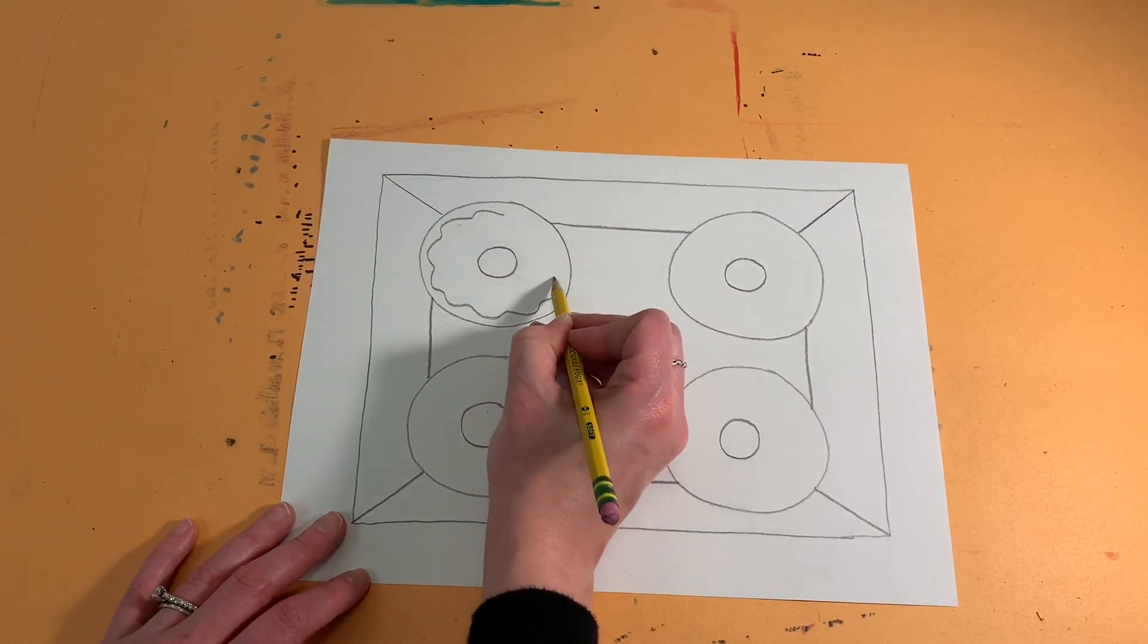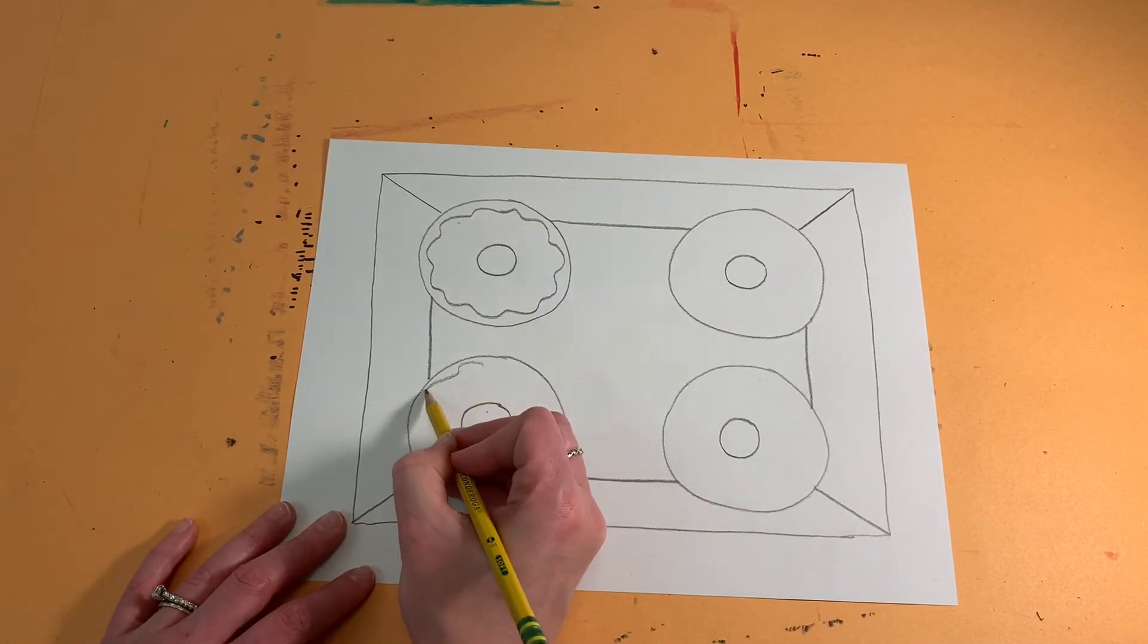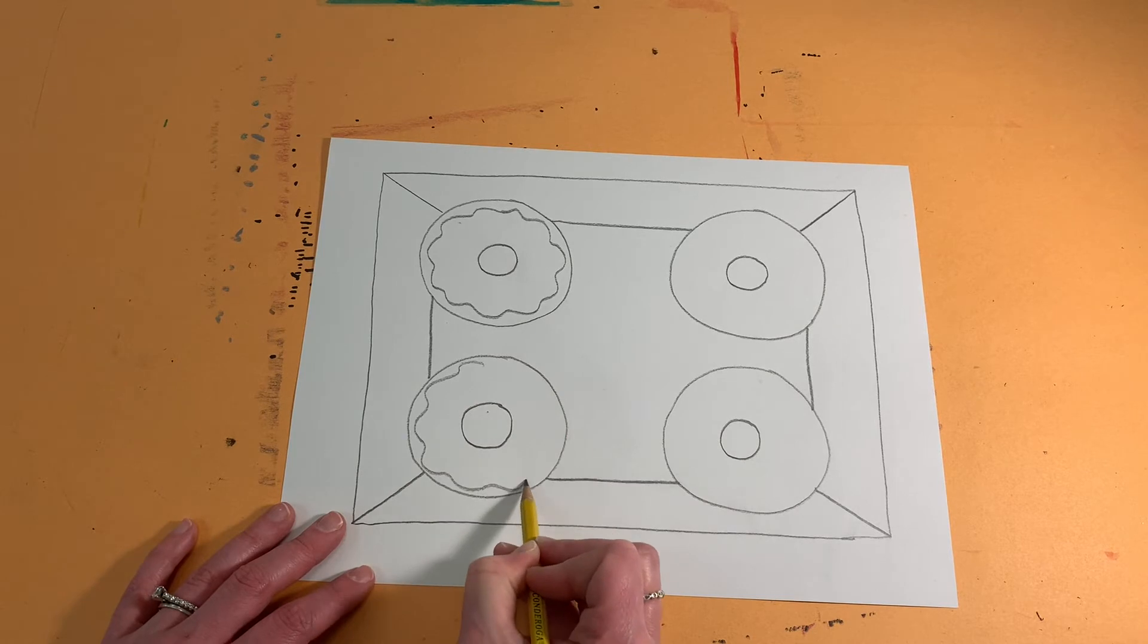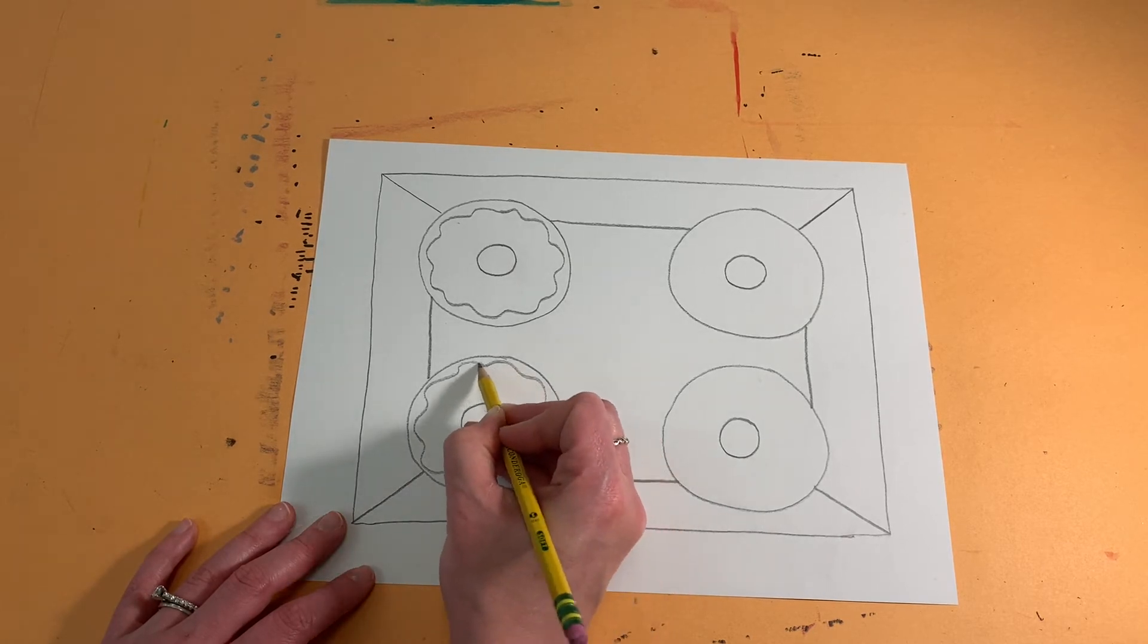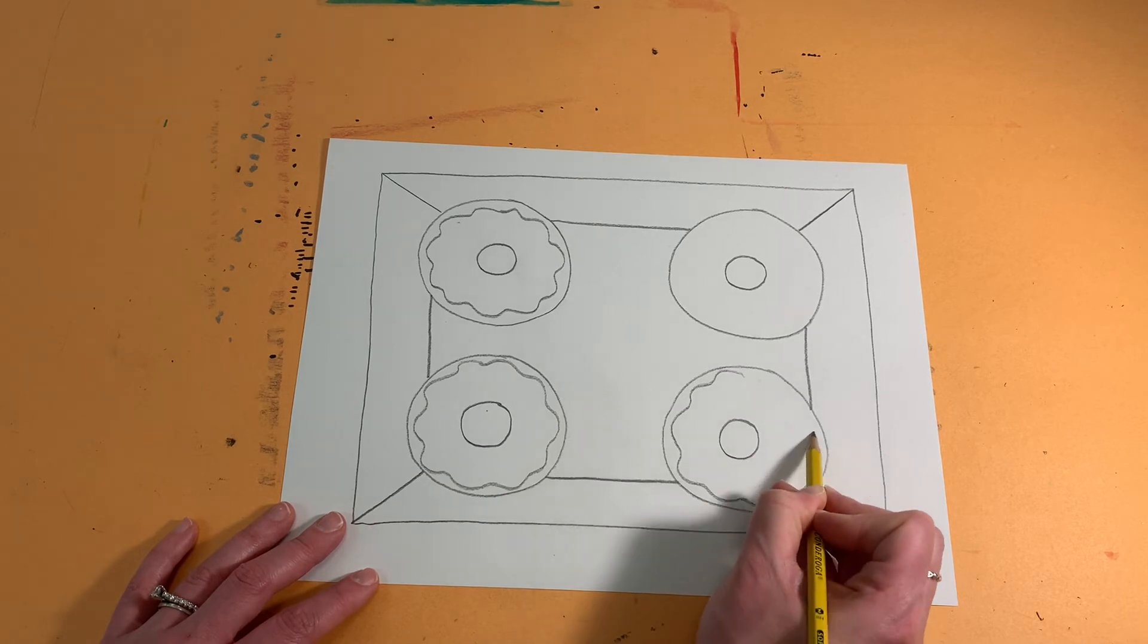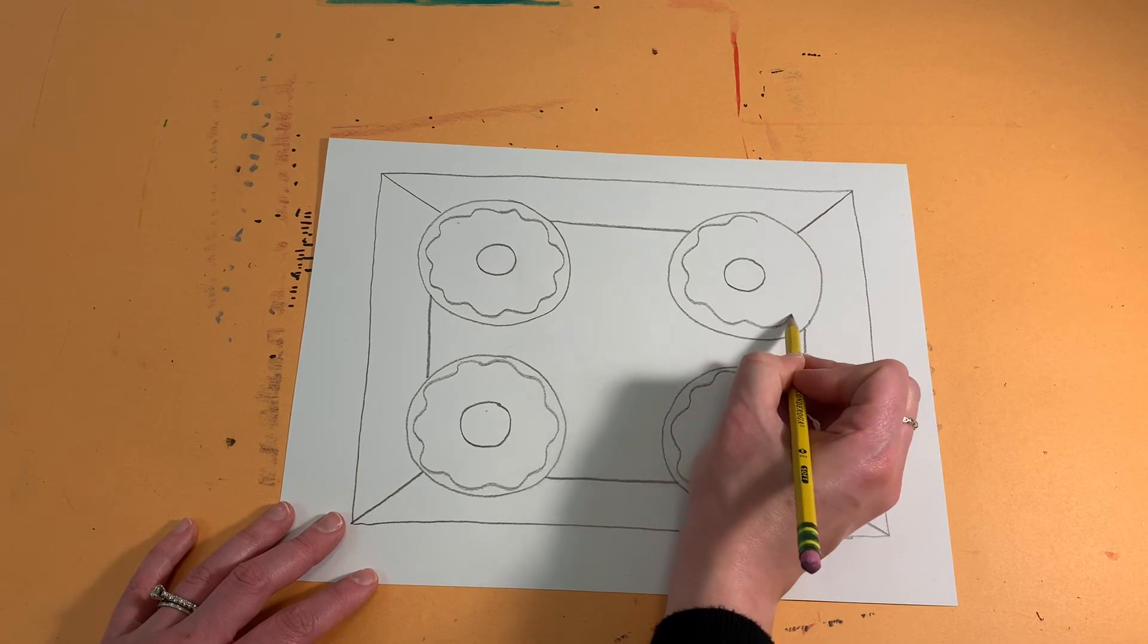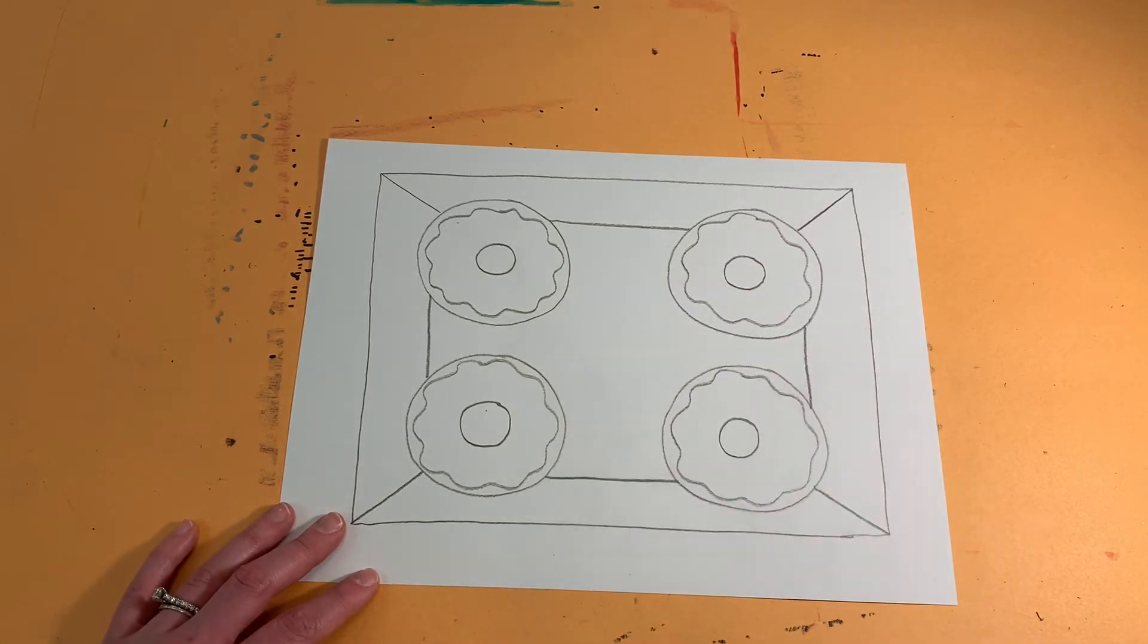I'm going to add some frosting to each of my doughnuts. So I'm going to do a wavy oval line or circle line here on each of my doughnuts to show the frosting. Frosted doughnuts are Mrs. A's favorite. So I'm going to put frosting on all of them. So it's just a circle shape using a wavy line instead of a straight line.